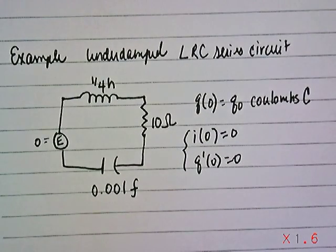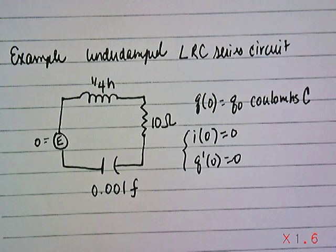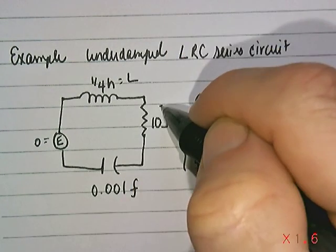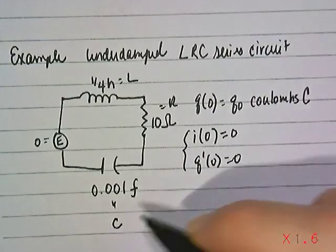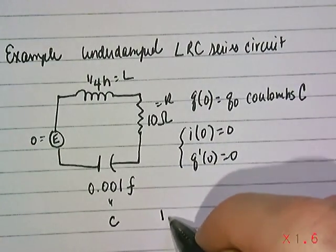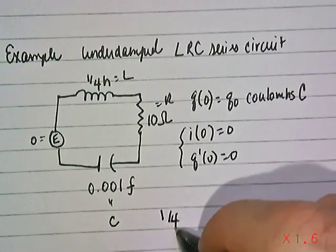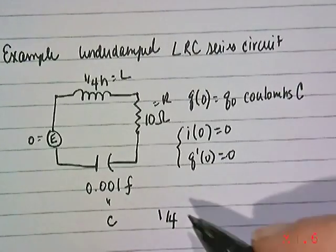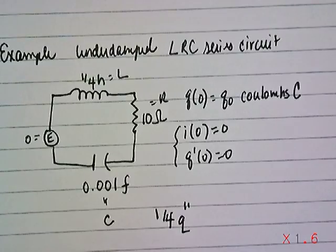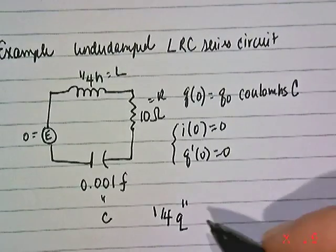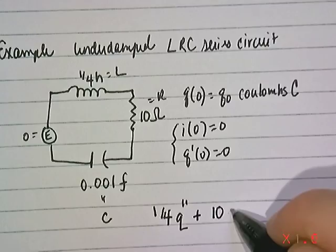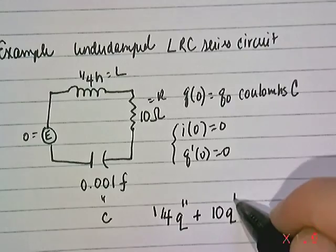So what we now can do is use the equations that we had before. We've got our values here for L. We have R and we have C. We can plug those in to our modeling equations. So we'll have 1 over 4, 1 fourth, which is L, times and saving us some notation, the second derivative of the charge. We'll use some prime notation, save some room here. Plus the resistance, 10 times the derivative of the charge, Q.